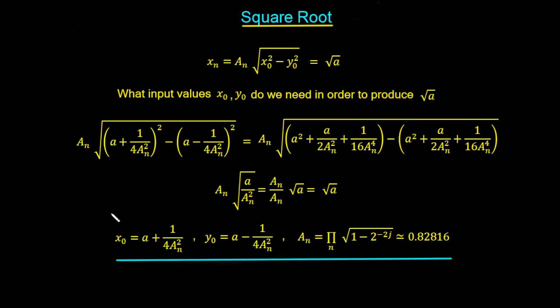In the last video, we generated the inverse hyperbolic tan function. Now we're going to postpone our look at the inverse hyperbolic sine and cosine, because in order to generate these functions, we're going to have to use a more complicated process. So for the moment, let's stick with the hyperbolic vectoring mode and we'll see the different functions we can generate in that mode. And once we've looked at that, we'll move on to the rotation mode, and finally we'll have a look at how to generate the inverse hyperbolic sine and cosine.